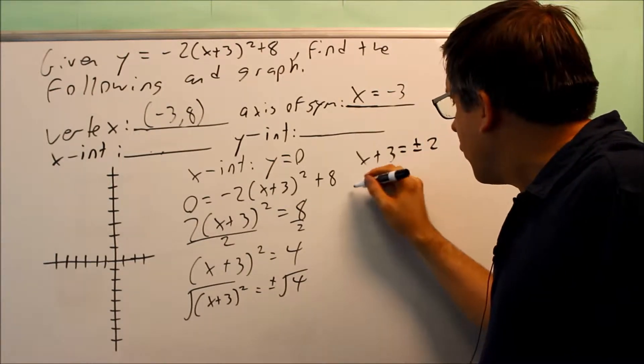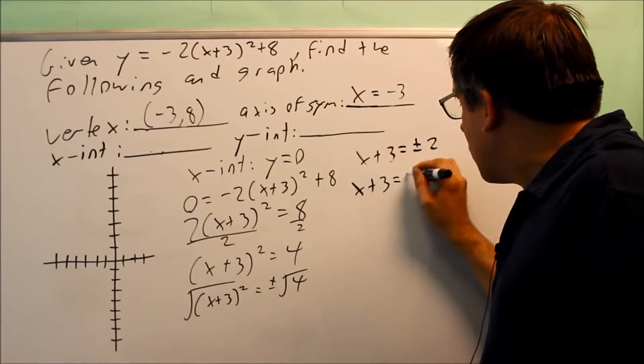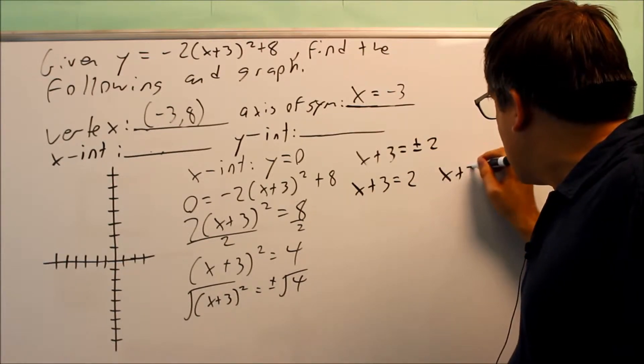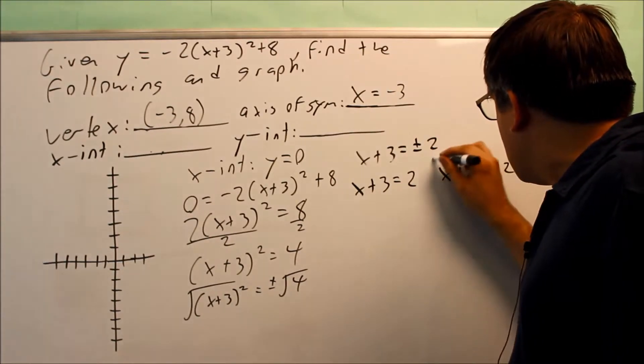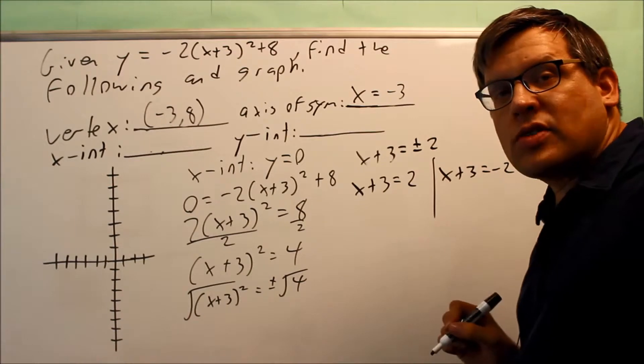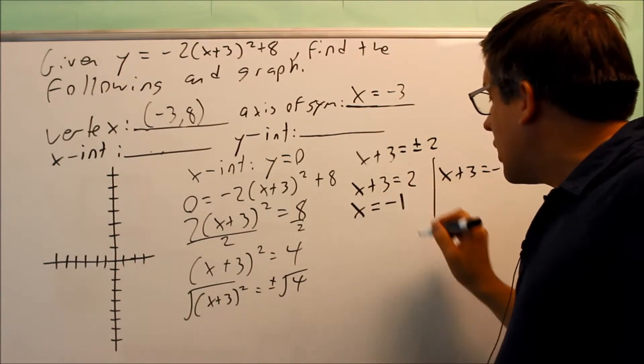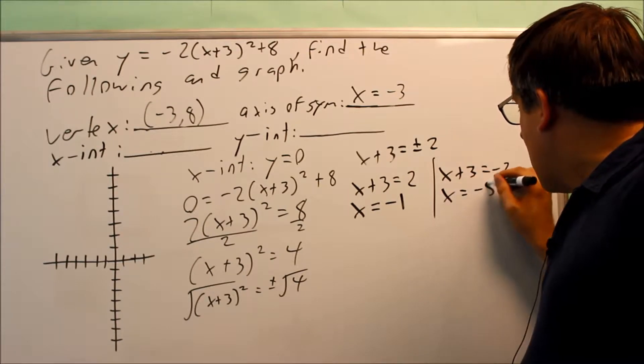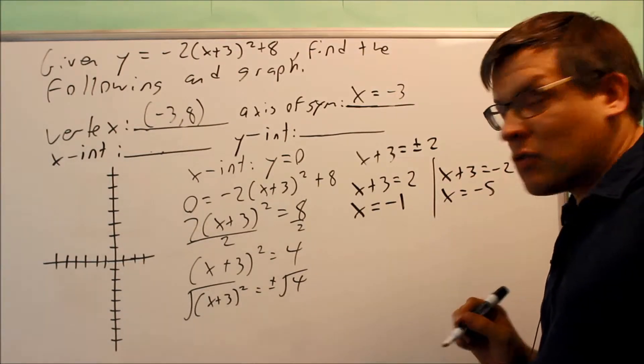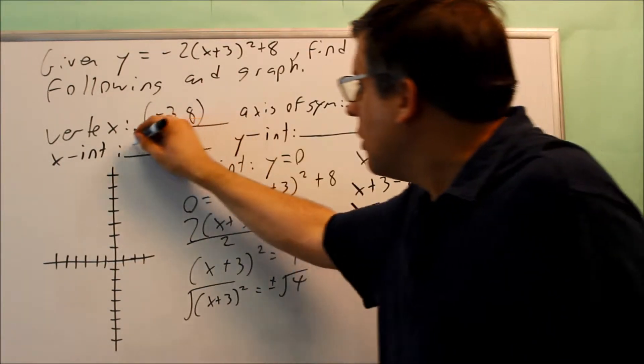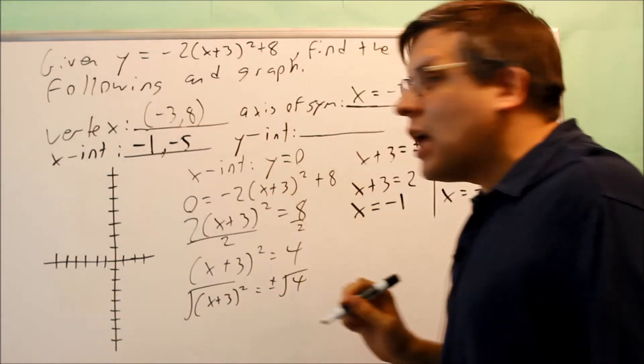Now that can be broken up into two different equations. x plus 3 equals 2, and also x plus 3 equals negative 2. So I have two different ones that I can work out there. The first one, I'll get x is equal to negative 1. This one, I'm going to get x is equal to negative 5. So my two intercepts are going to be negative 1 and negative 5. Those are my x-intercepts.